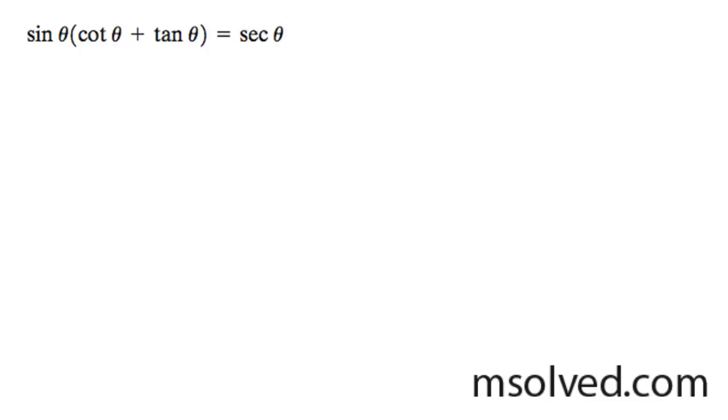For the trig identity, first I'm going to put it in simplest terms: sine of theta times the cotangent, which is cosine theta over sine theta plus sine theta over cosine theta.